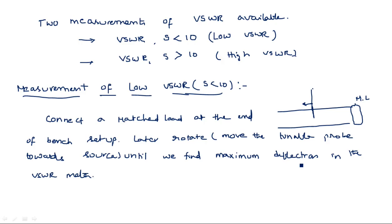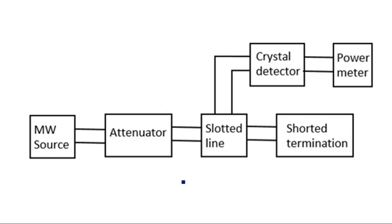We note down the standing wave ratio reading, which is less than 10, giving us S equal to some value. The bench setup consists of a microwave source, attenuator, slotted section carriage terminated with a matched load, a tunable probe, a crystal detector, and a VSWR meter or power meter — both can be measured from the same device.